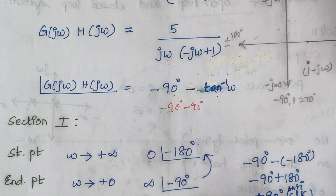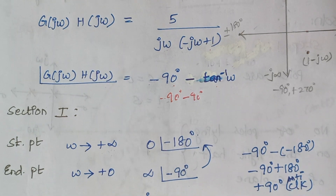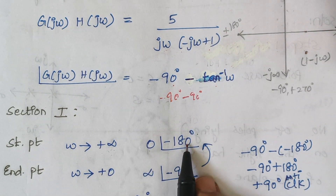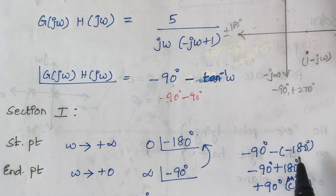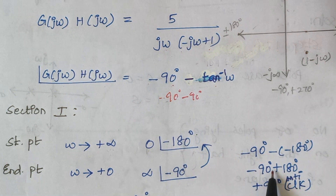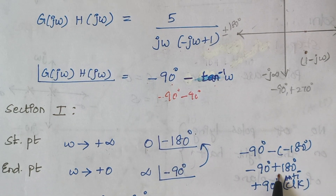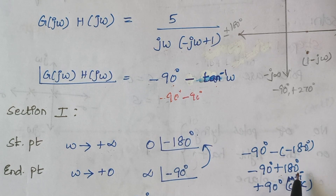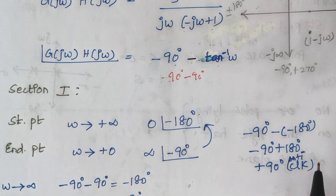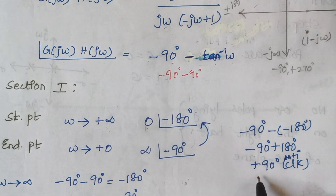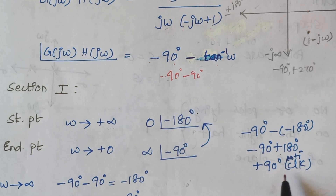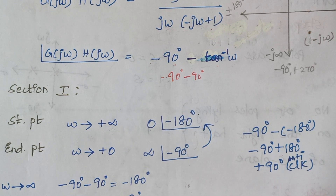Now we find the angle of rotation for section 1. Subtracting: minus 90 minus (minus 180) = minus 90 plus 180 = plus 90 degrees. So the plot must be rotated 90 degrees in the anticlockwise direction.